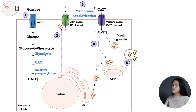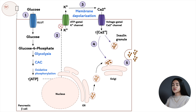As calcium concentration increases, this triggers the release of insulin by exocytosis. Insulin then lowers blood glucose levels by promoting glucose uptake in the tissues. When blood glucose levels decrease, the pancreatic beta cells detect this and inhibit the glucokinase reaction, stopping the release of insulin.